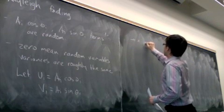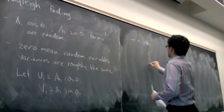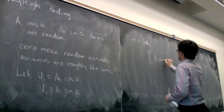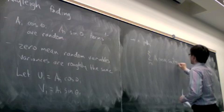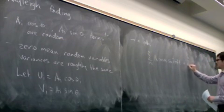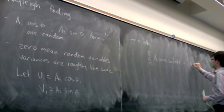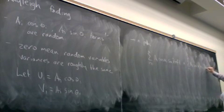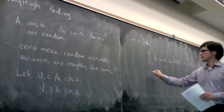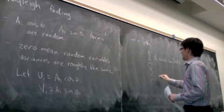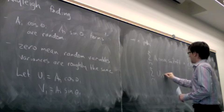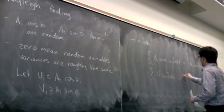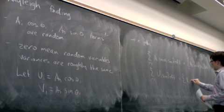So with n paths, we have the sum from i equals one to n of a_i cosine theta_i, times cosine 2 pi f t.